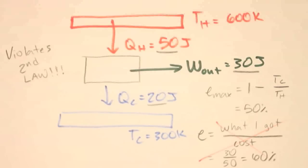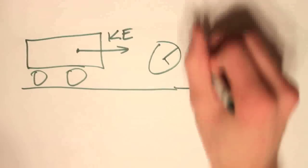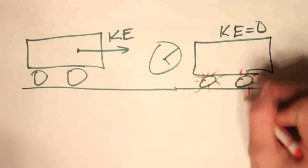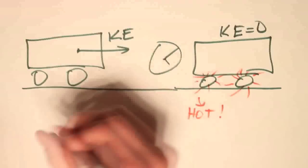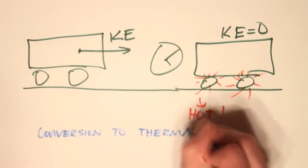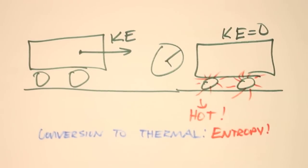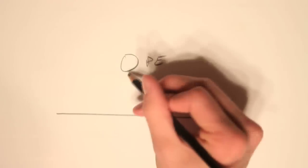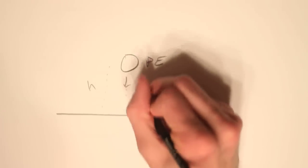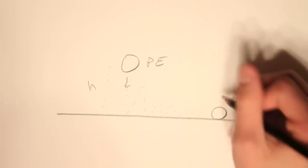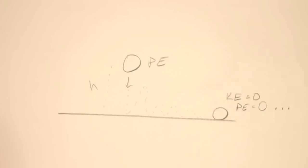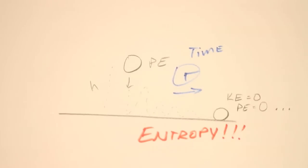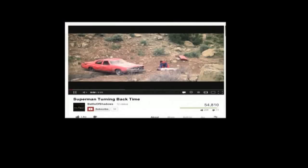One way to think about entropy: imagine braking to a stop. You have kinetic energy, you brake, and then you have no kinetic energy — your wheels and brakes will be hotter, so entropy has increased. Any conversion of energy to thermal energy is an increase in entropy, and this is an irreversible process, meaning you cannot get that energy back. Another way to think about entropy: a ball dropped from a height converts potential energy to kinetic energy and then to thermal energy. The ball will not cool down and start bouncing back up — this is an irreversible process, and time only flows one way.